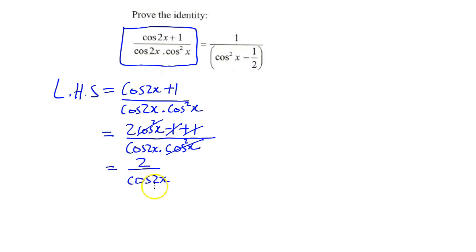Now at this stage, cos 2x once again has three expansions. I can choose cos squared x minus sine squared x, 2 cos squared x minus 1, or 1 minus 2 sine squared x, but I'm not sure which one to choose.